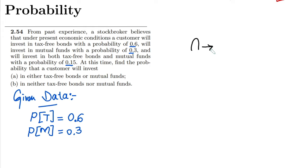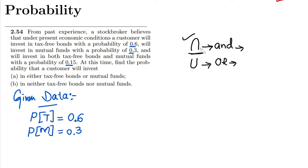The intersection is used as an AND sign, meaning both conditions must be satisfied. The union is used as OR, meaning any one or both can apply — either one, the second, or both. Since the given data includes both tax-free and mutual funds together, we write the probability of T intersection M as 0.15.